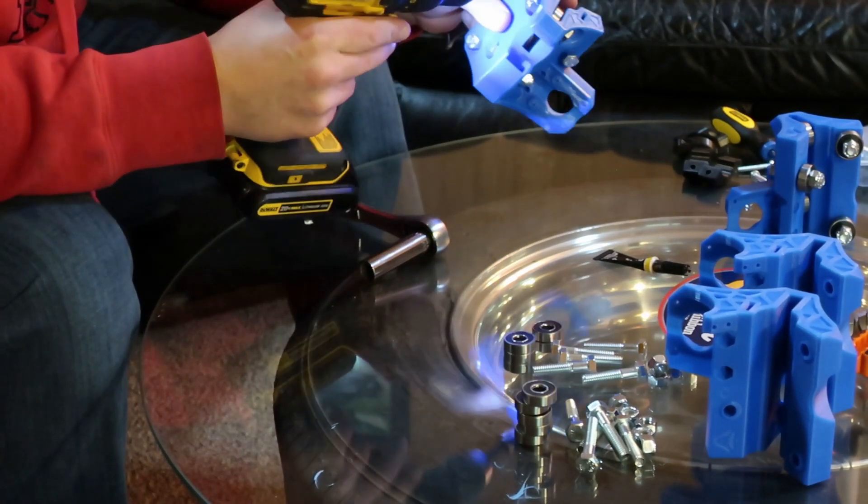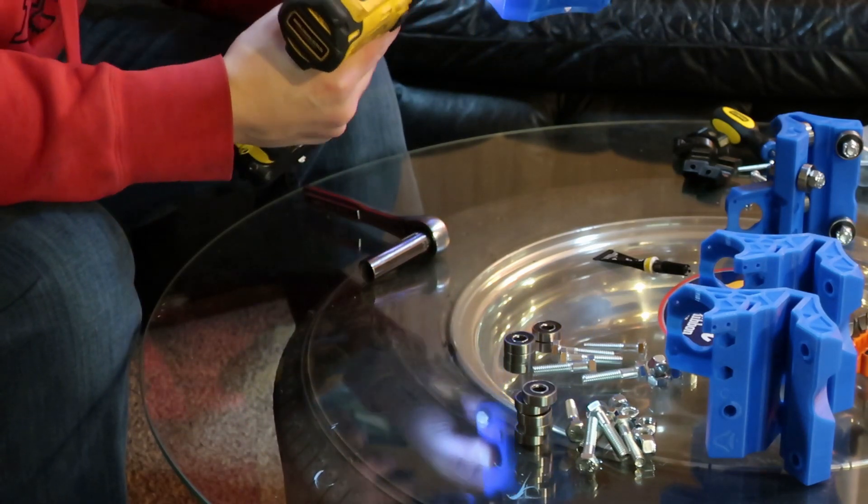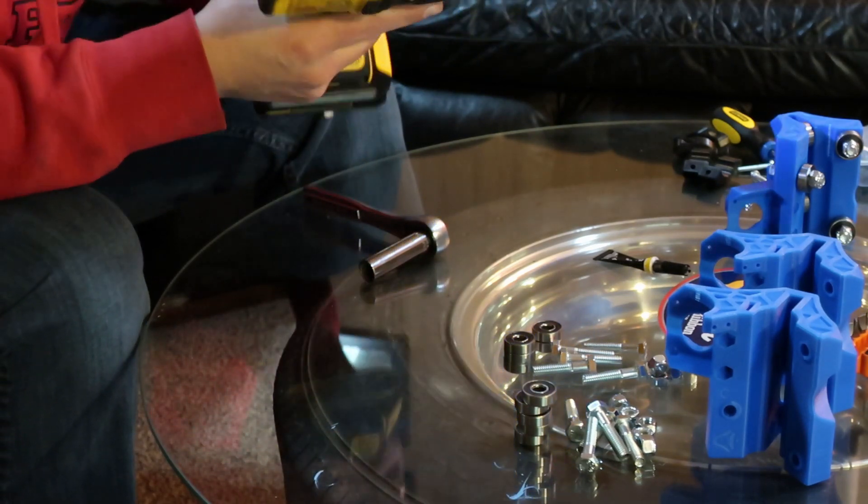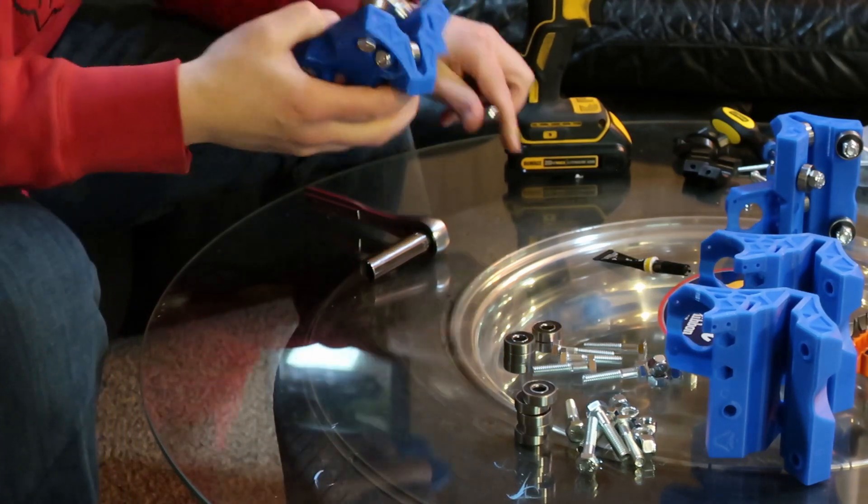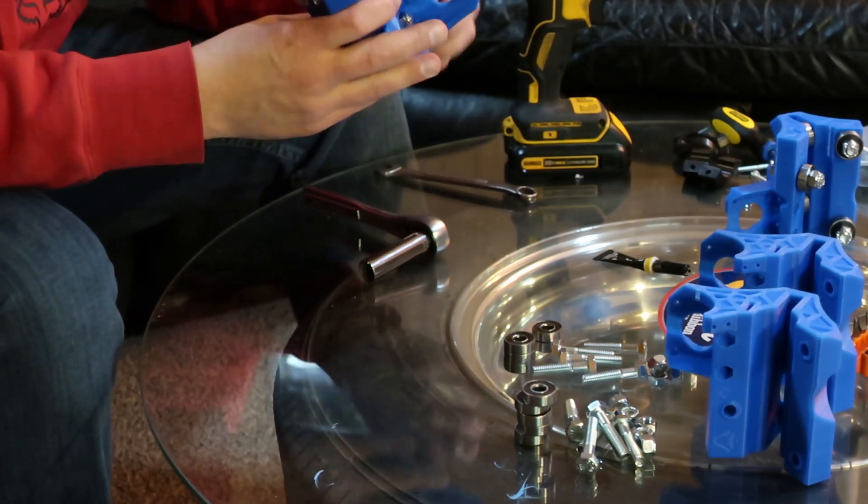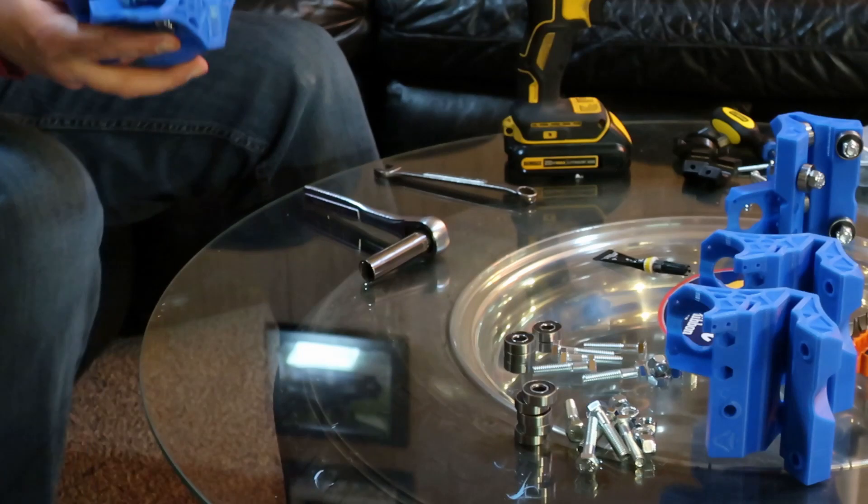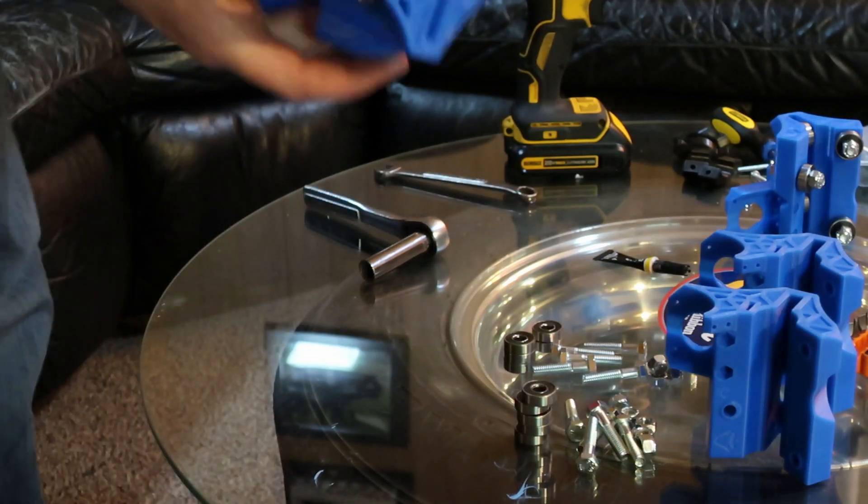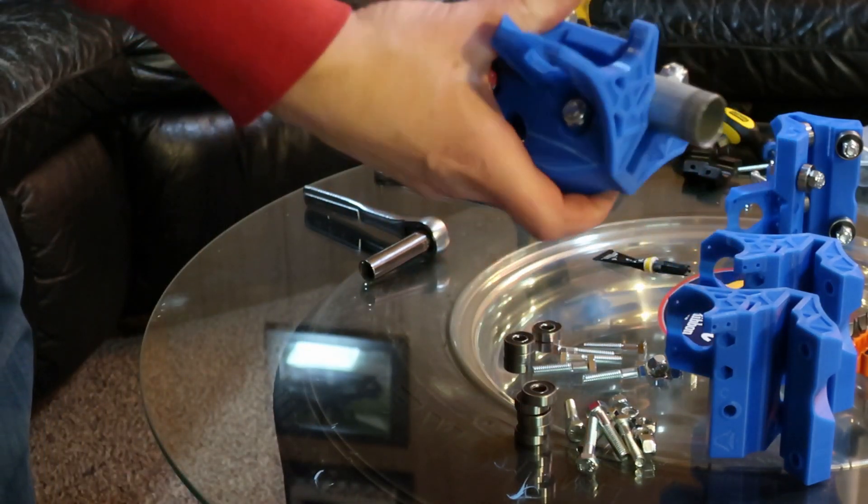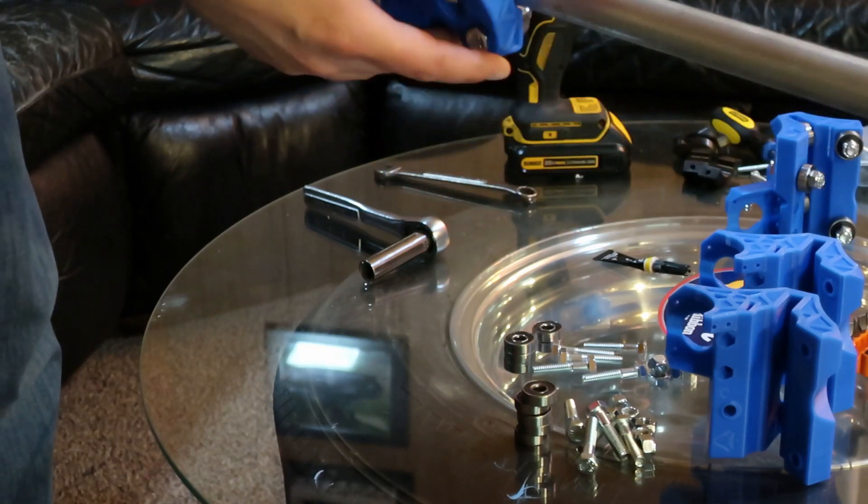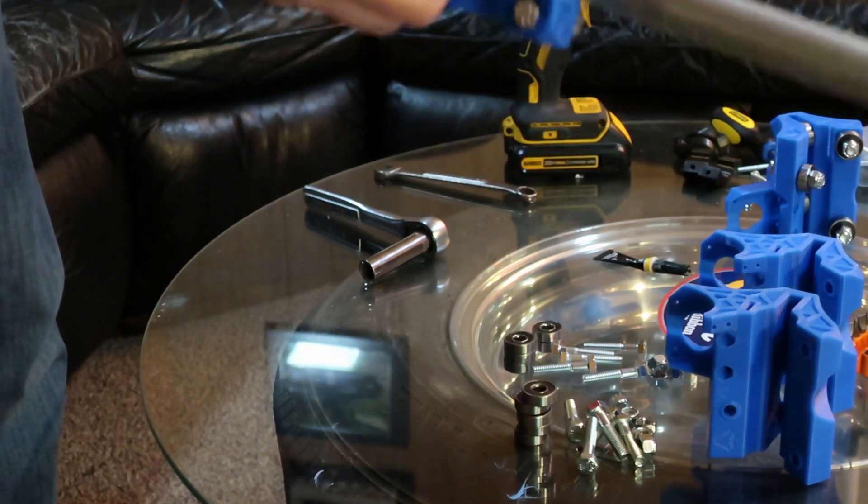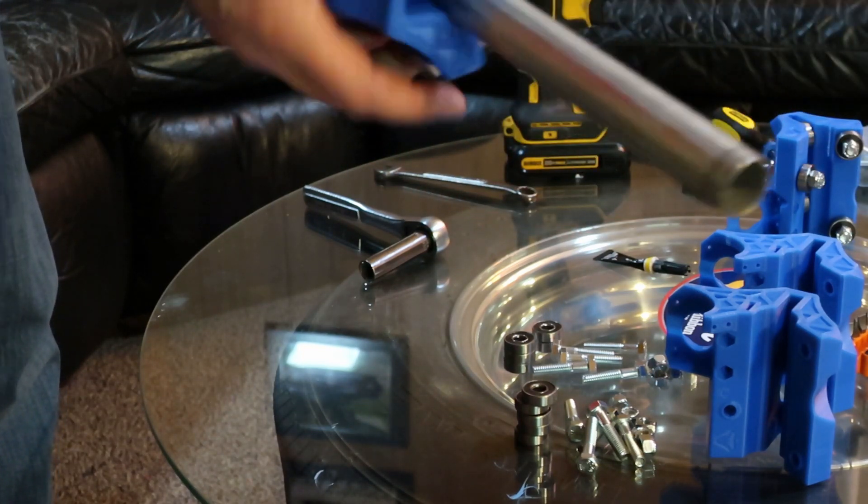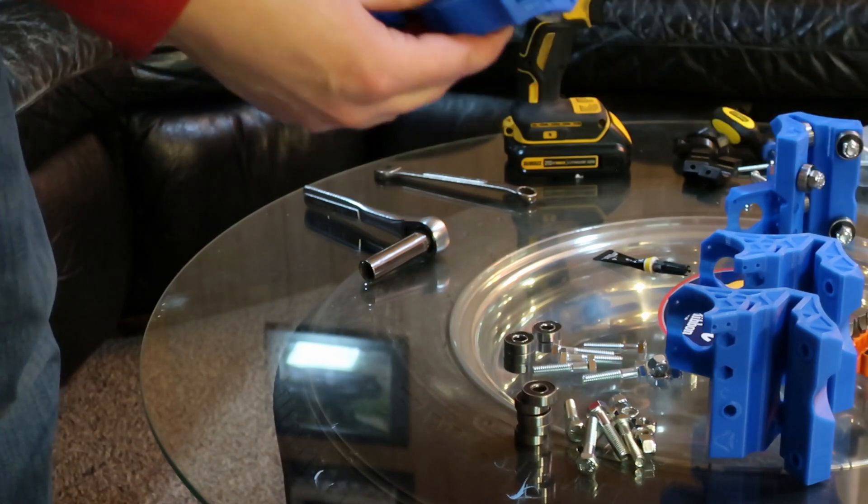They say seven inch-pounds or something. You definitely don't want this plastic stuff too tight. Then these just slide right on the rail. And mine are already pretty snug, so I don't have to tighten up the tension bolts.